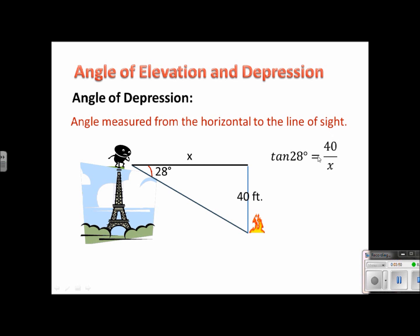And we can swap diagonally over the equal sign and rewrite this. So we would put the x up here and the tangent 28 down here. We would rewrite this as 40 over tangent 28 and put that in your calculator. And you would get that this is approximately 75 feet. So he could tell the fire department exactly where that fire is located.